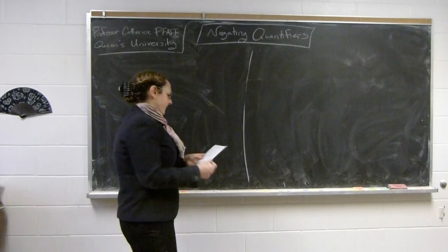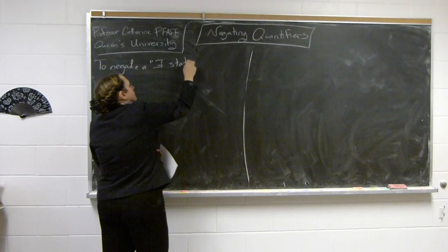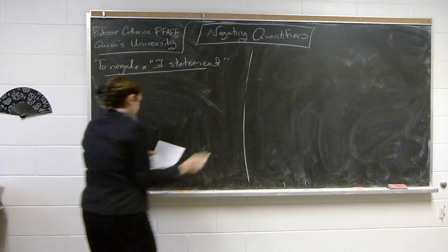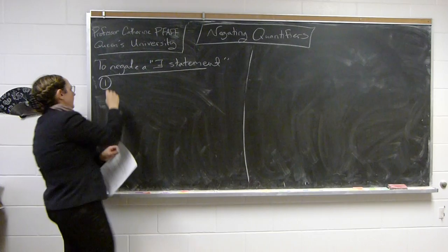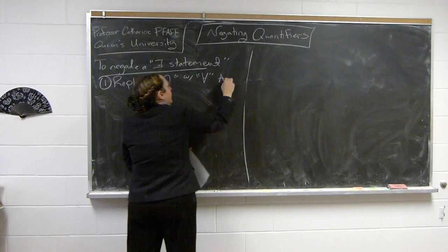So to negate a 'there exists' statement, there are kind of two steps. You're going to notice there's a lot of similarity between negating a 'there exists' statement and a 'for all' statement. First, we want to replace 'there exists' with 'for all.' And the other piece is we need to negate the conclusion.